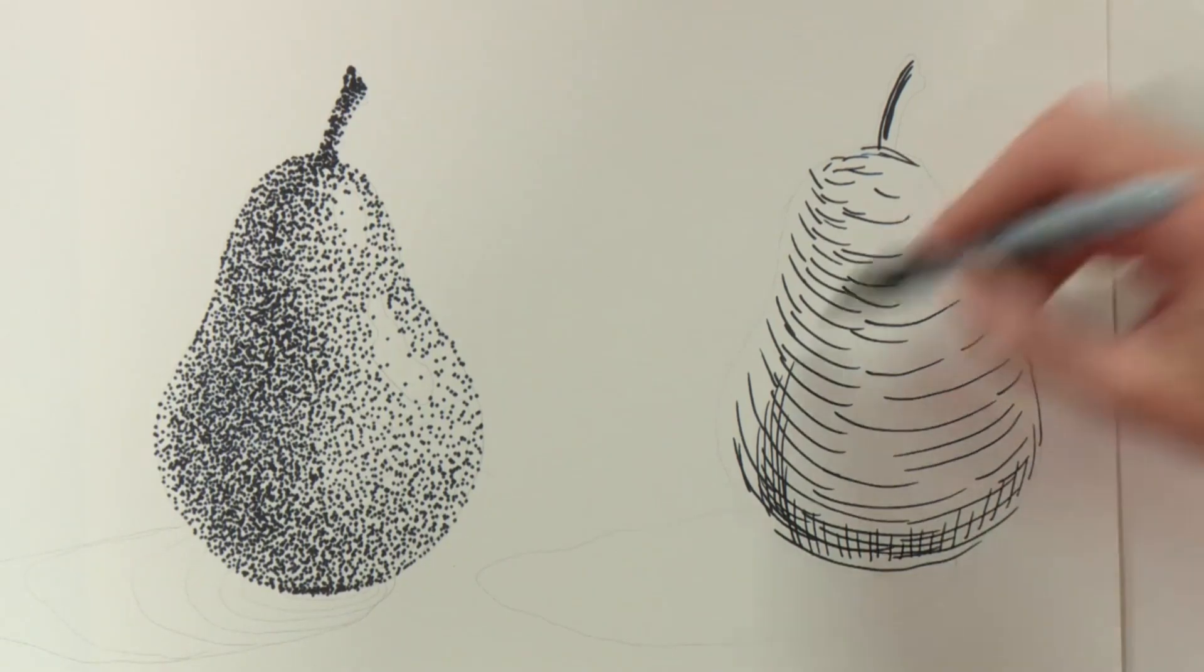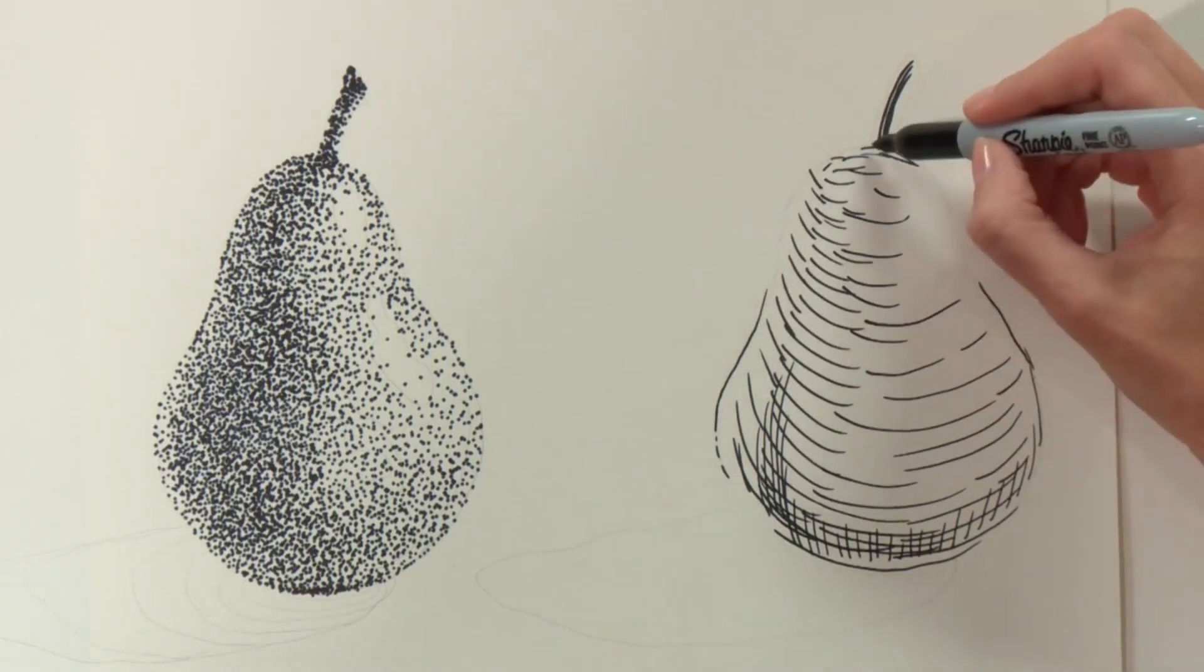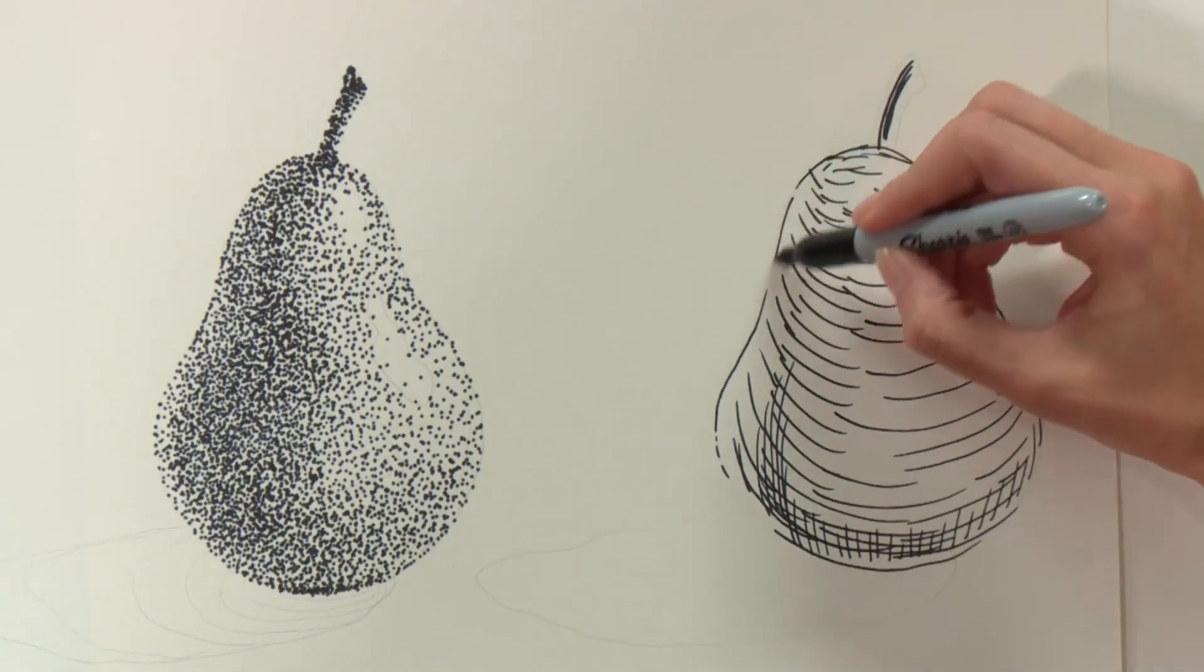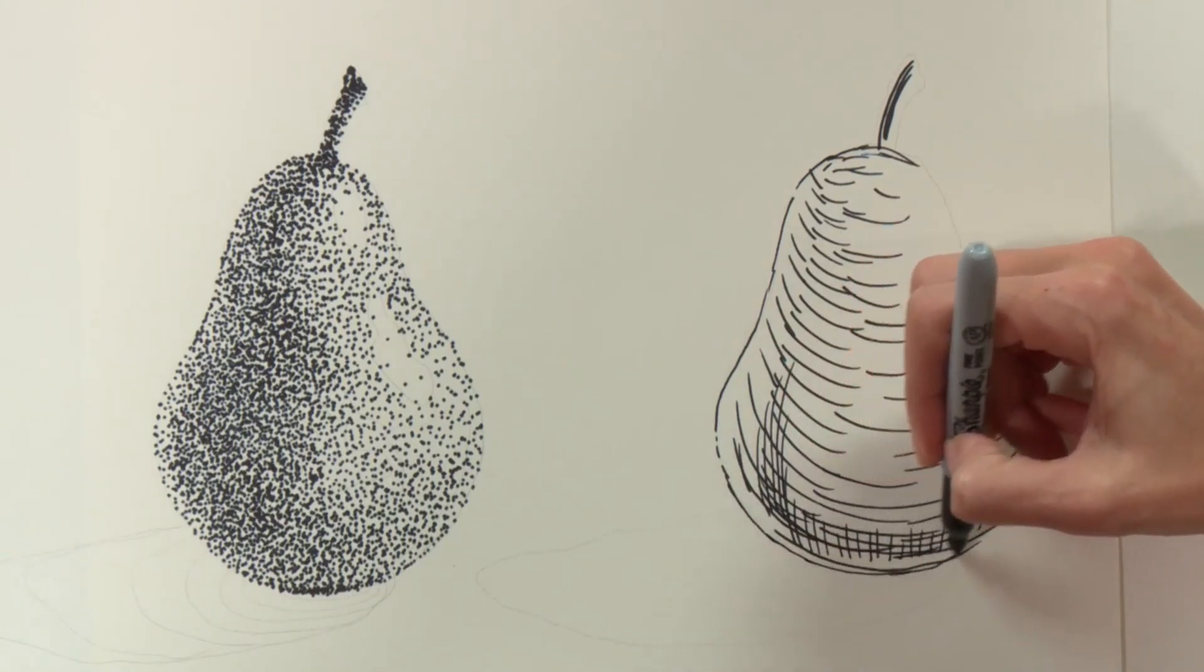And even though we don't want to outline our pear per se, since we are using hatch lines and cross hatch lines, we can do that to a certain extent. Because these lines will eventually blend in with the shading that we're creating.